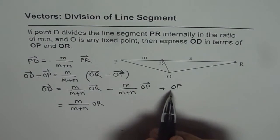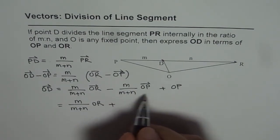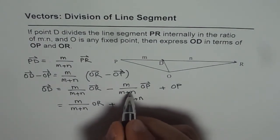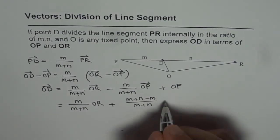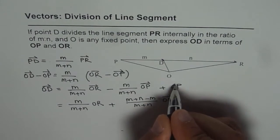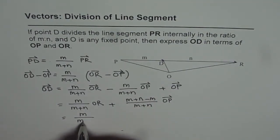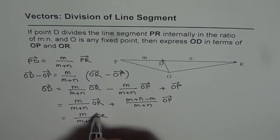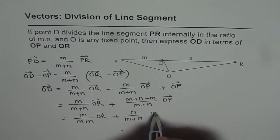Now let's simplify this part which gets M over M plus N times OR. If I take M plus N, the numerator will be M plus N times OP which is M plus N minus M times OP. That simplifies to M over M plus N times OR plus N over M plus N times OP.